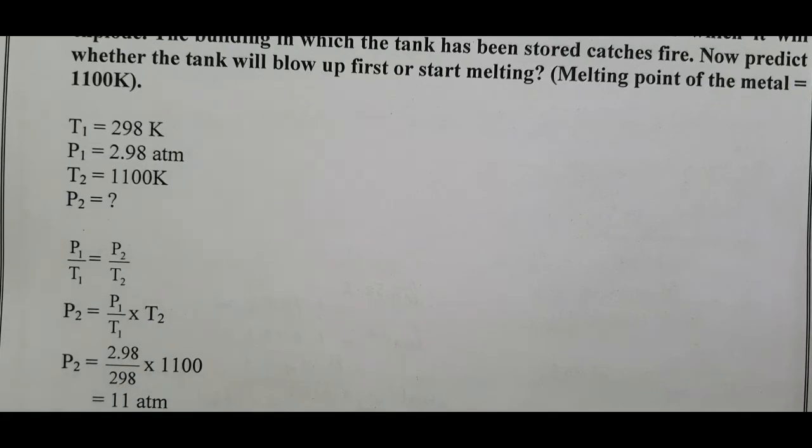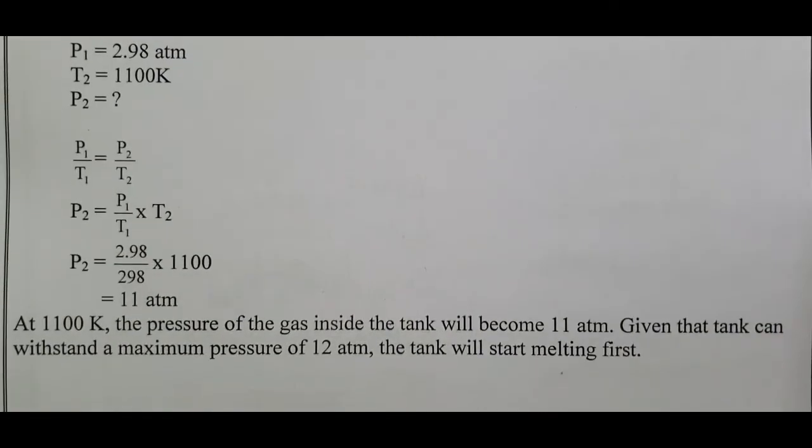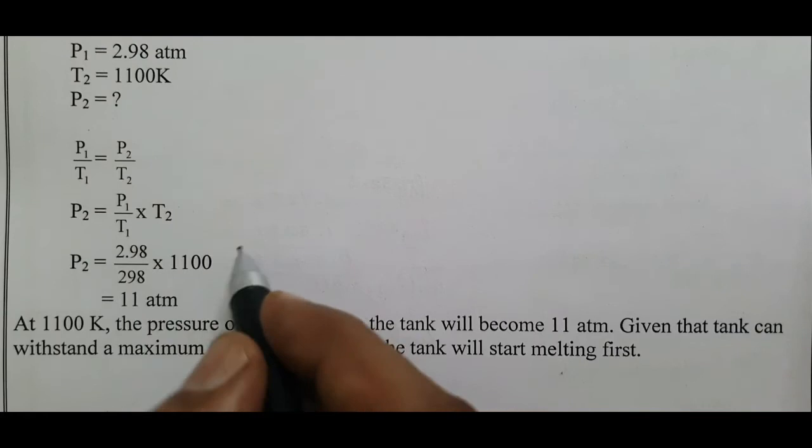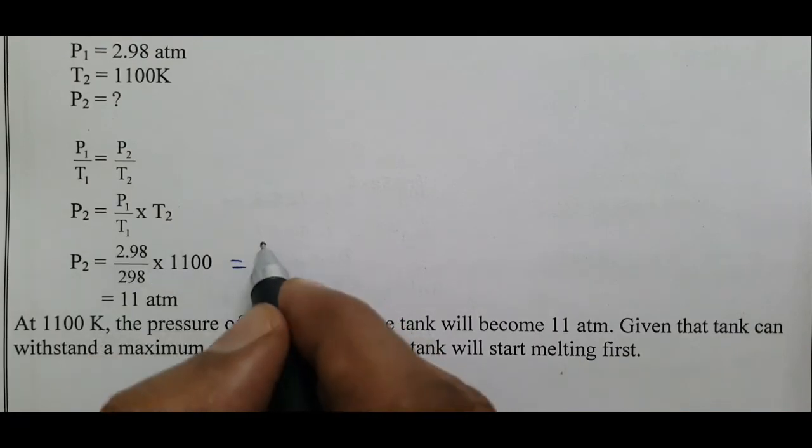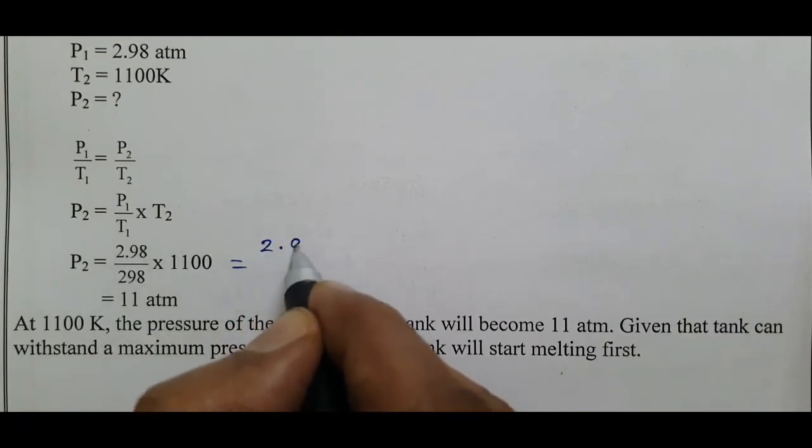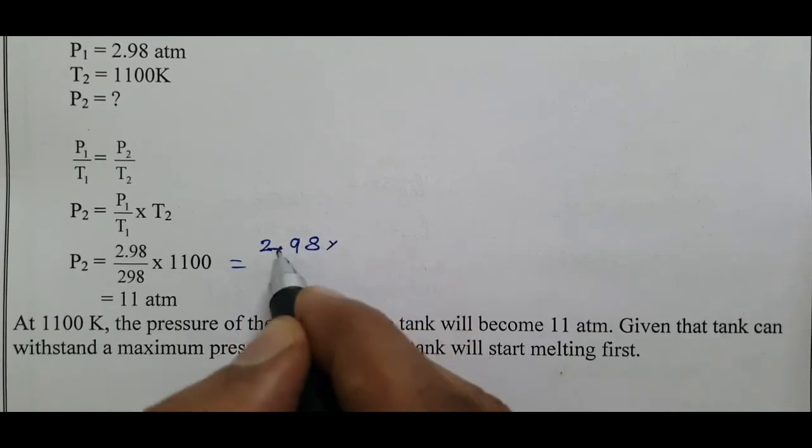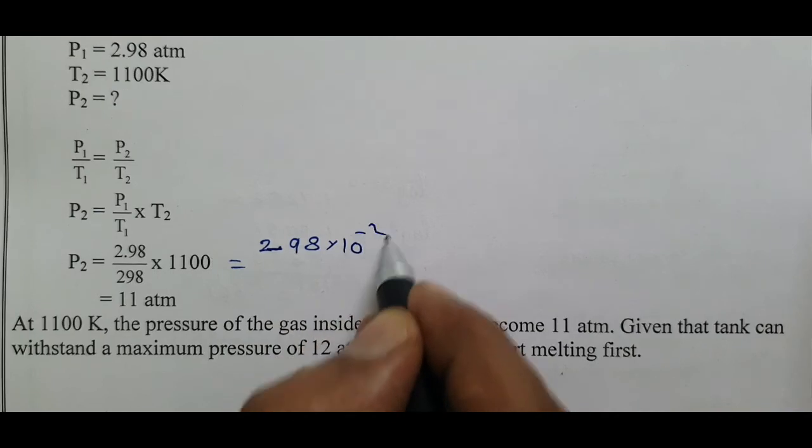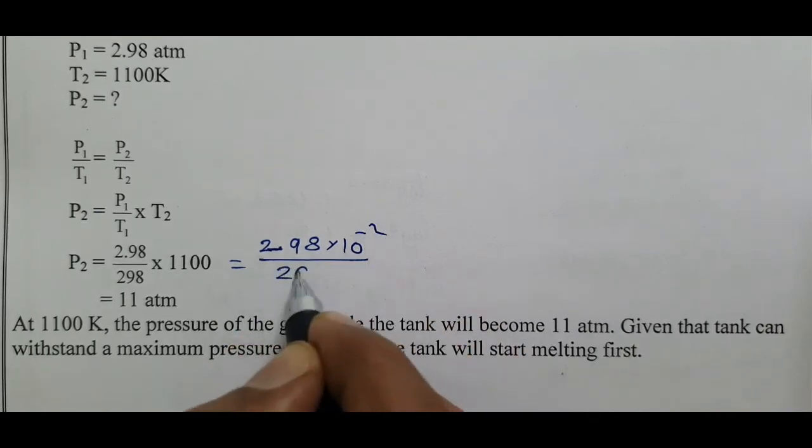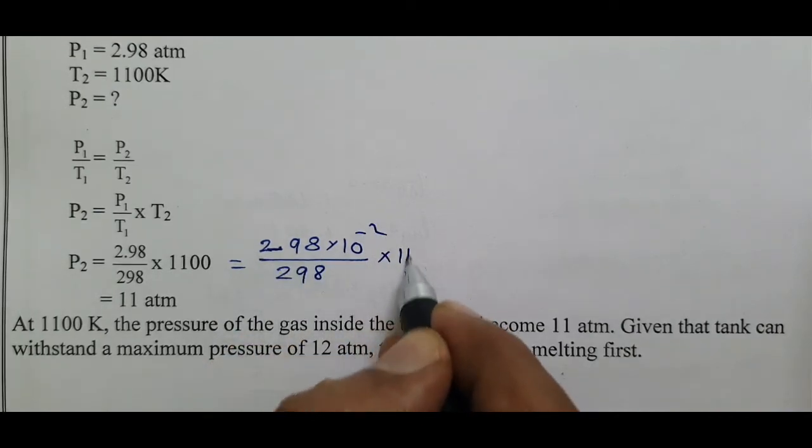2.98 divided by 298 times 1100. We can solve this as 298 can also be written as 2.98 times 10 to the power minus 2 divided by 298 times 1100.